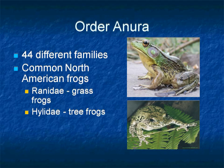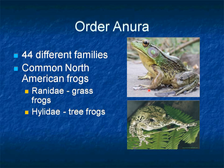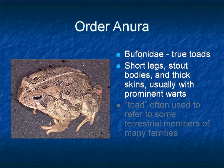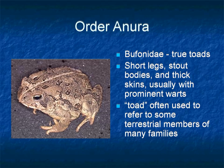The best known frog families of North America are Ranidae, also known as grass frogs, which contain most of the familiar frogs, and Hylidae, commonly known as tree frogs. Toads belong to family Bufonidae. They have short legs, a stout body, and thick skin usually with prominent warts. The word 'toad' is also used informally to refer to some terrestrial members of several families.